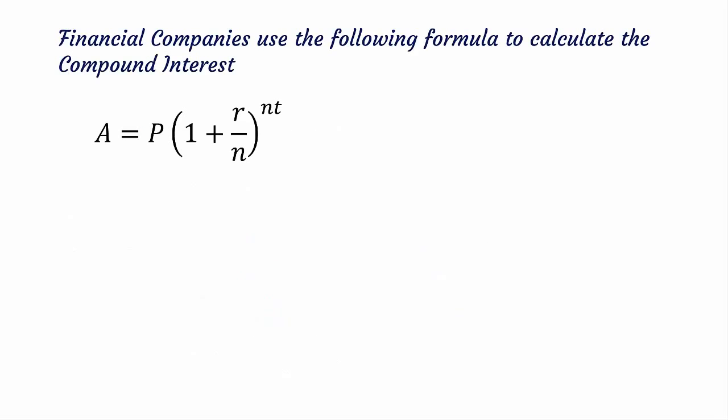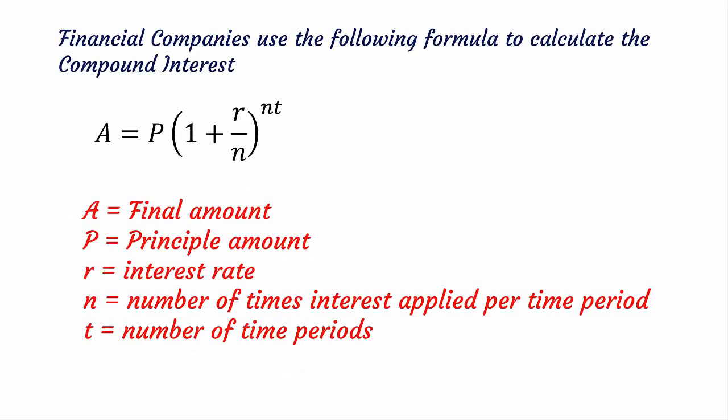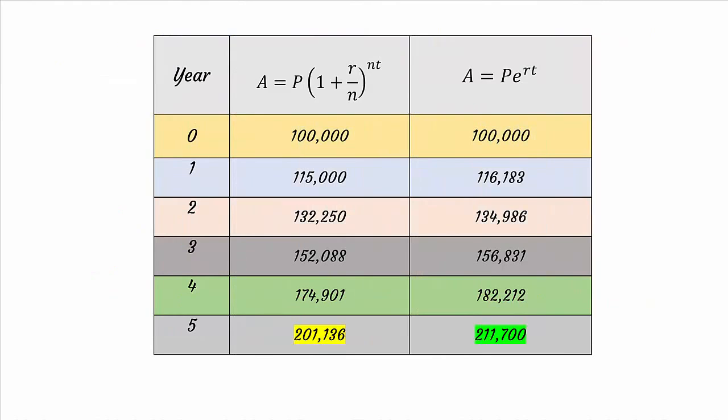On the other hand, financial companies apply a different formula to calculate compound interest. The formula which they use is shown, where P is the principal amount. Now look at the table very closely. Can you answer why the profits are different? You may pause the video and check what is the fundamental difference in these two formulas.